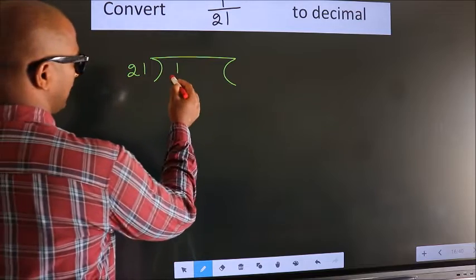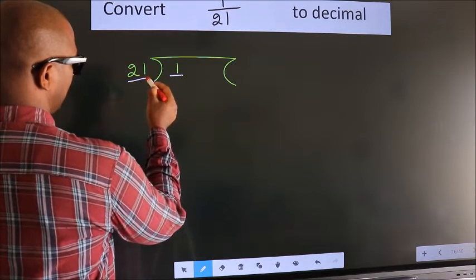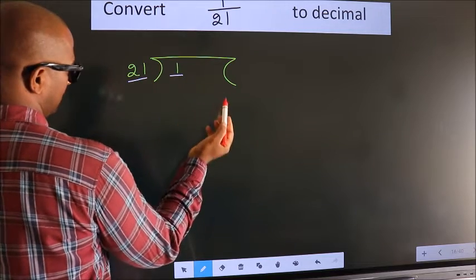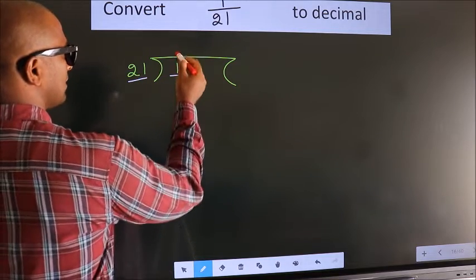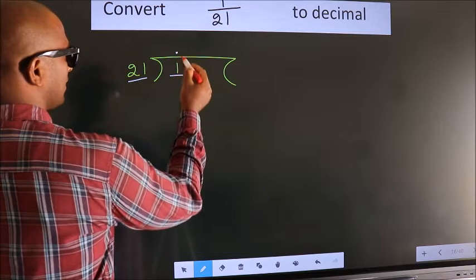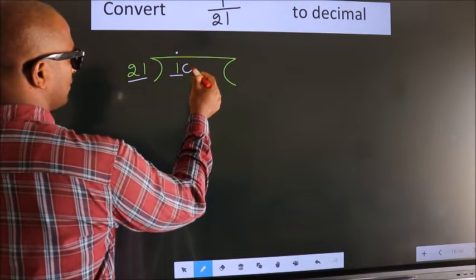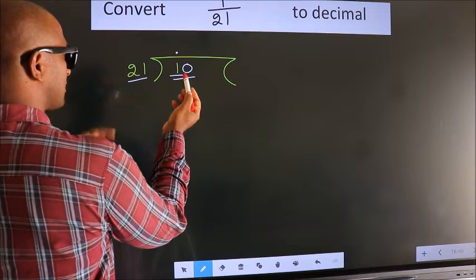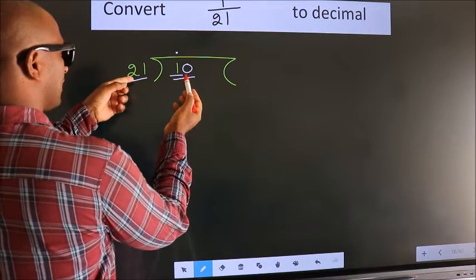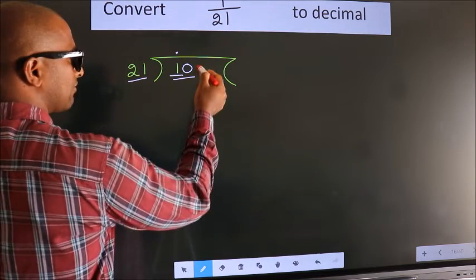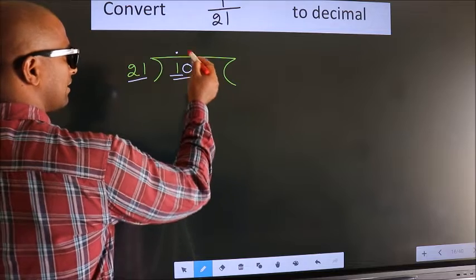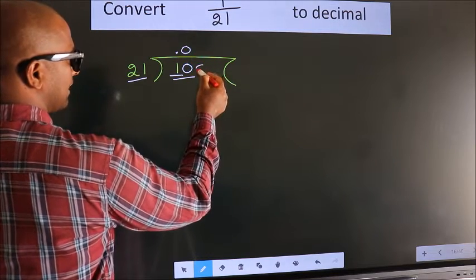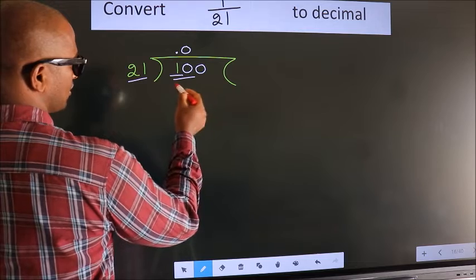Here we have 1, here 21. 1 is smaller than 21. So what we should do is put a dot here and take 0 here, so 10. 10 is still smaller than 21, so we put 0 here to get 100.